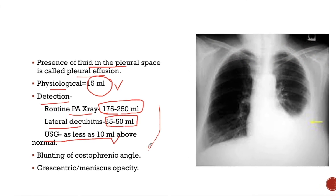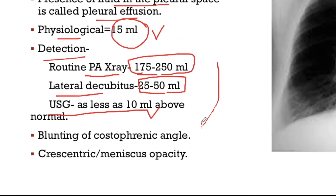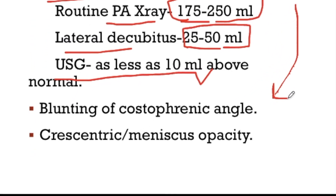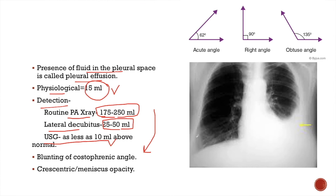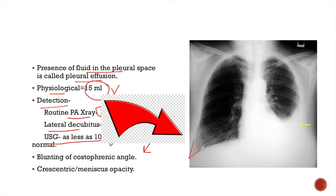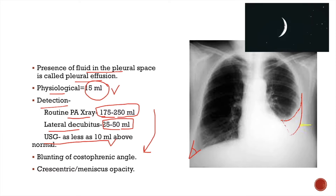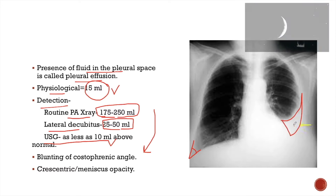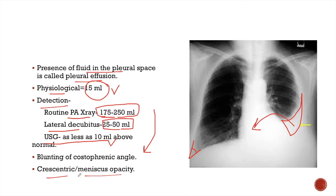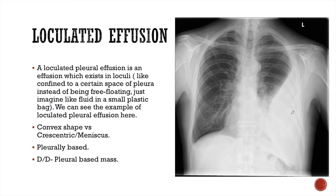Pleural fluid on a posterior-anterior chest radiograph appears as blunting of the costophrenic angle. The right costophrenic angle is acute, meaning less than 90 degrees, while on the left side the angle is blunted. We can see a meniscus or crescentic shape opacity on the left side — this is the pleural effusion. Pleural effusion causes crescentic opacity or opacity with a meniscus sign. Not all pleural effusions lie in the dependent area of the lungs forming a meniscus.